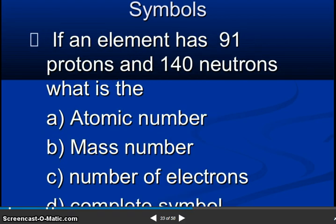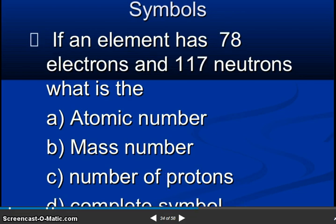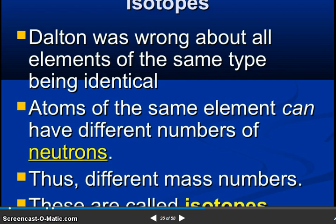So if an element has 91 protons and 140 neutrons, what is the atomic number, mass number, number of electrons, complete symbol? So if an element has 78 electrons and 117 neutrons, what is the atomic number, mass number, number of protons, complete symbol?